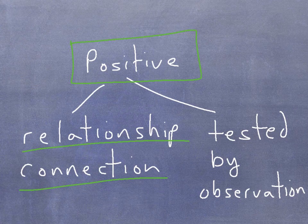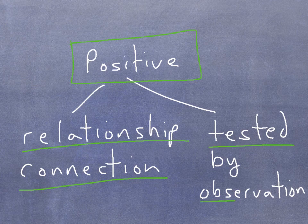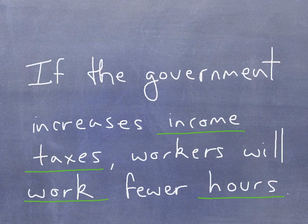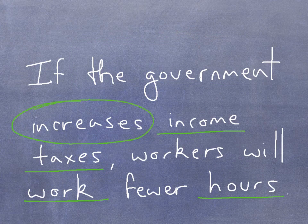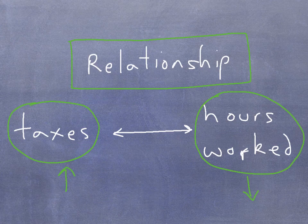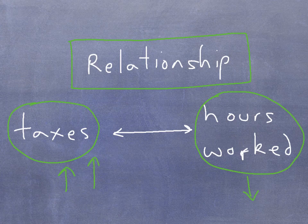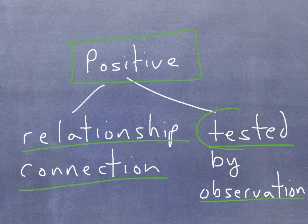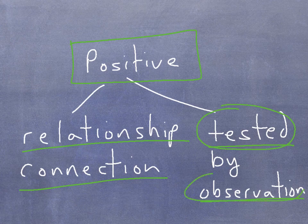Another thing about positive statements is that they can actually be tested by observation. So if we wanted to know whether increasing income taxes will lead to people working fewer hours, we could look back over history at times when governments of various countries have increased taxes and actually see if the number of hours worked did indeed go down. In other words, we could test this relationship by observing facts. And this is a second characteristic of positive statements.